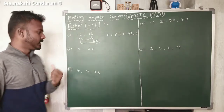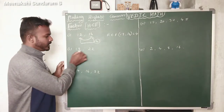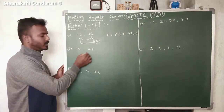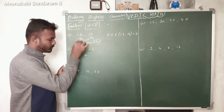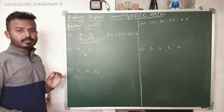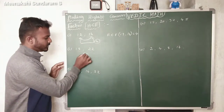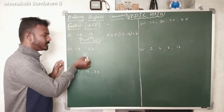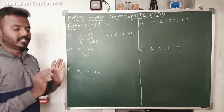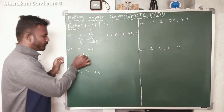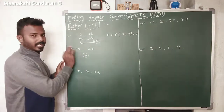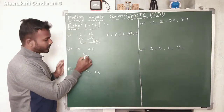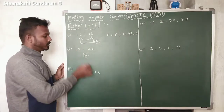We can go to the next example: 18 and 22. Find the difference of these two numbers — the difference is 4. Now we can check whether 4 divides 18 and whether 4 divides 22 or not. But 4 does not divide 18, and it will not divide 22 either.